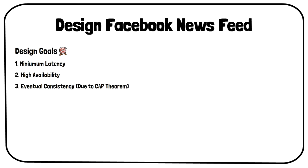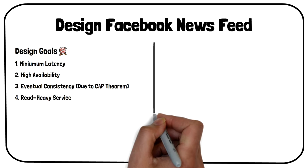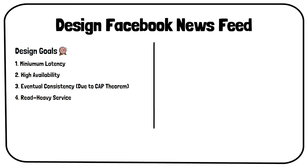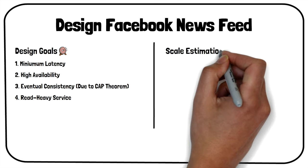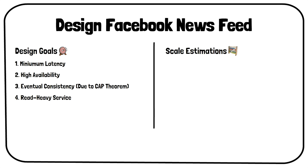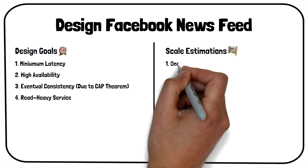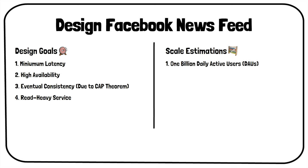Our system will be read-heavy in nature, as more users will be loading their newsfeed rather than posting statuses on Facebook. Thus, the number of read requests will be far greater than write requests. To design an efficient system in the interview, we will have to consider the following scale estimations. These estimations will help us in explaining the scale of the system to the interviewer. On average, the system will have 1 billion daily active users, with each user fetching their timeline 10 times a day. Thus, the system will receive around 10 billion newsfeed requests per day.